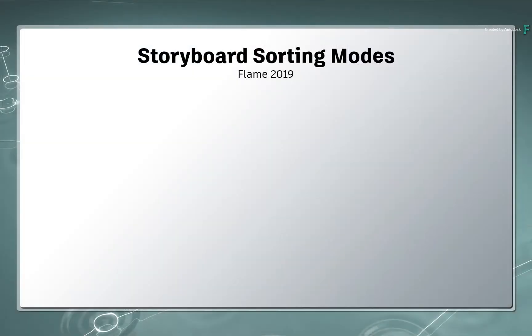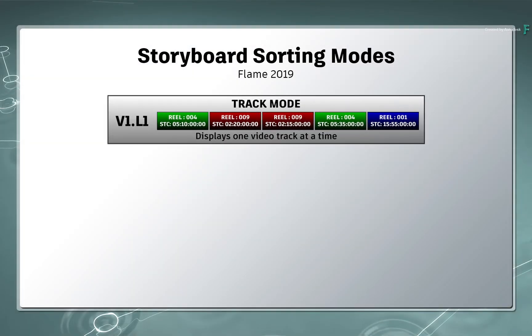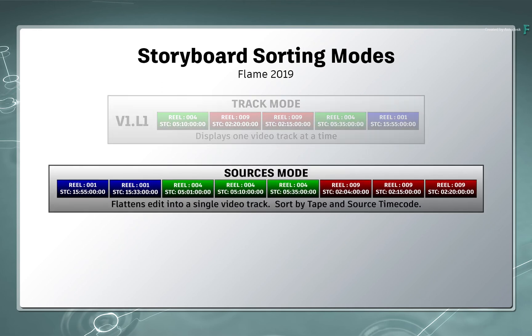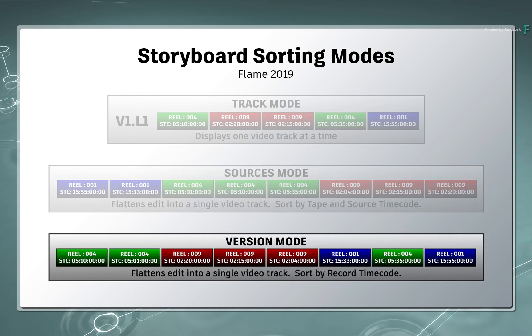As a final recap: the Track Sorting Mode shows all the segments in the storyboard reel in the order of the edit from the currently focused video track. The Sources Sorting Mode flattens all the timeline segments onto a single track and sorts them by tape and source timecode. The Version Sorting Mode also flattens all the timeline segments onto a single video track, but sorts them by the record timecode of the edit.